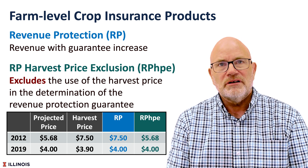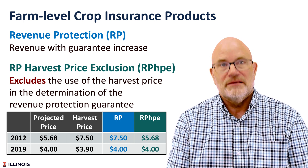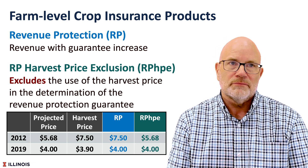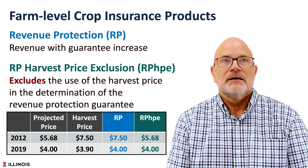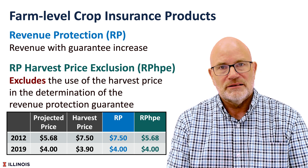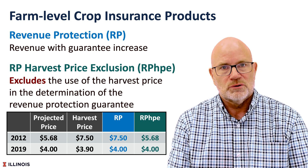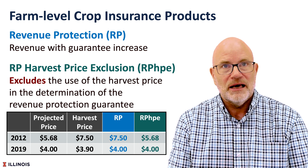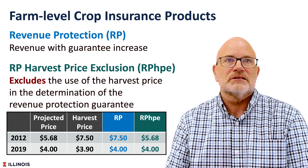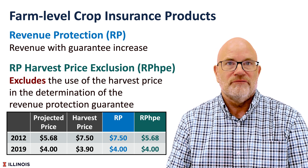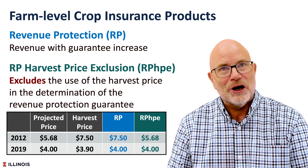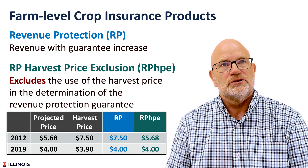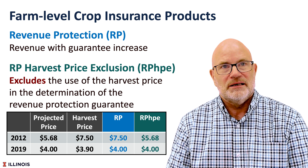The difference between the two can be looked at in two years. In 2012, the drought year, we had a projected price of $5.68 and a harvest price of $7.50. The harvest price was well above the projected price of $5.68. RP used $7.50 in its guarantee, which is obviously much higher than the $5.68 projected price used in RPHPE.